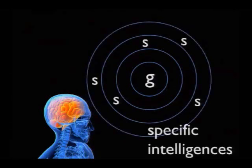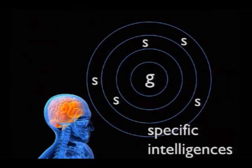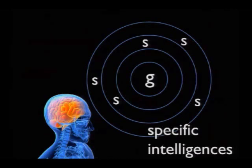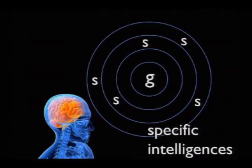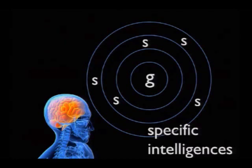In psychometrics, there's a notion that intelligence can be divided into two types. There's general intelligence, often abbreviated as G or the G factor, which lies at the center of all of our cognitive abilities. And then this is in contrast to specific intelligences, which are domain or task specific cognitive abilities that are very narrow and focused on one task or one ability.